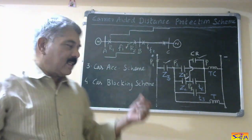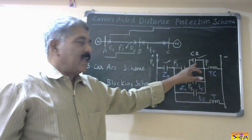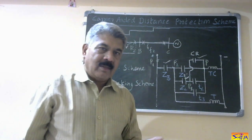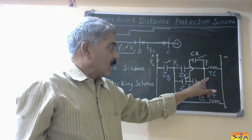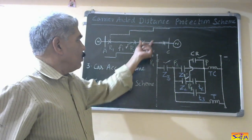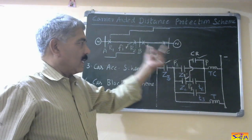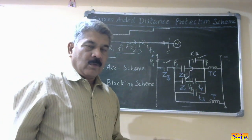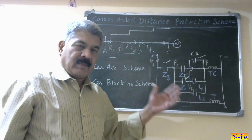Drawbacks: the first drawback remains — carrier signals are transmitted over the faulty line. The second drawback: if the carrier receive relay operates due to a noise signal, unless Z3 and Z2 have both closed, its closing will not energize the trip coil. This means faulty operation is restricted to the second zone for external faults only. For internal faults it has to operate, but if the carrier receive relay operates for this part too, there will be faulty operation of the circuit breaker. So the previous drawback is partly overcome. This scheme is better than the second, and the second was better than the first.